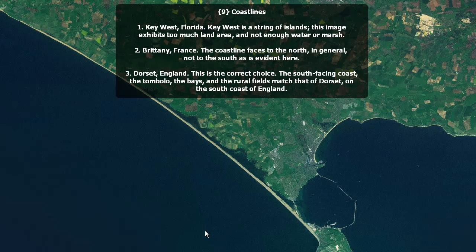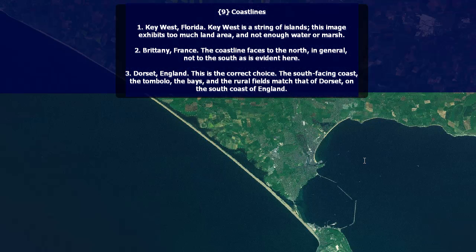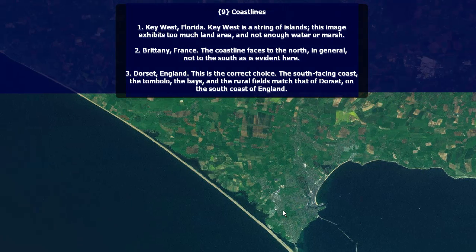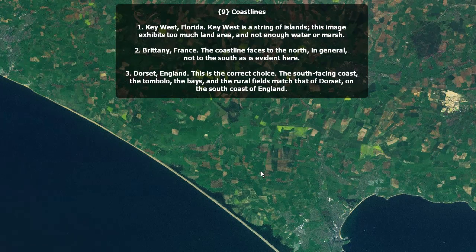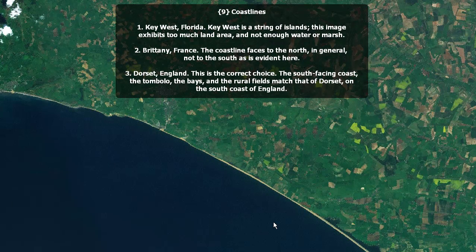Coastlines — it's Dorset, England. The south-facing coast, the Tombolo right here, the bays and the rural fields match that of Dorset on the south coast of England. Brittany, France's coastline faces to the north in general, not to the south as is evident here. Key West, Florida is a string of islands. This image exhibits too much land, so it can't be Key West.